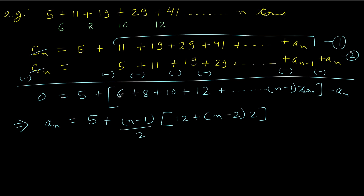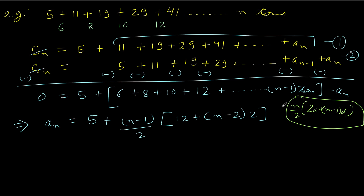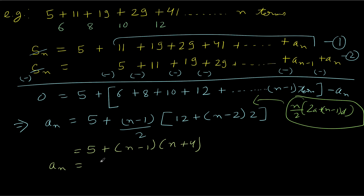The first term of the AP is 6, so 2A is 12. We apply the formula: N by 2 times (2A plus (N−1) times D), where N here is N minus 1. So it becomes ((N−1)/2) times (12 plus (N−2) times 2). If you simplify, taking 2 as common: 5 plus (N−1)(N+4). Expanding, A_N equals N squared plus 3N plus 1.